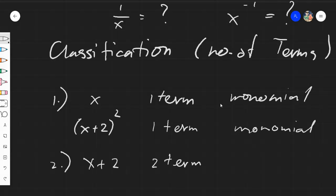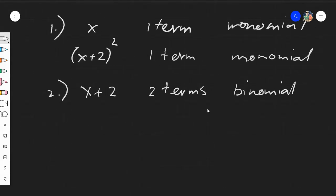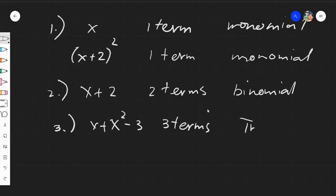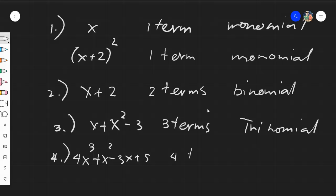A polynomial with two terms, such as x plus 2, is called a binomial. A polynomial with three terms, such as x plus x squared minus 3, is called a trinomial. Lastly, a polynomial with four or more terms — such as 4x cubed plus x squared minus 3x plus 5 — is called a multinomial or simply a polynomial.